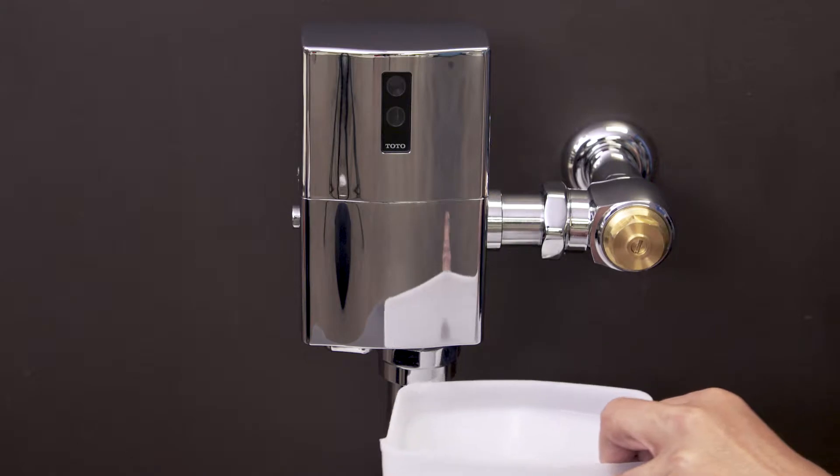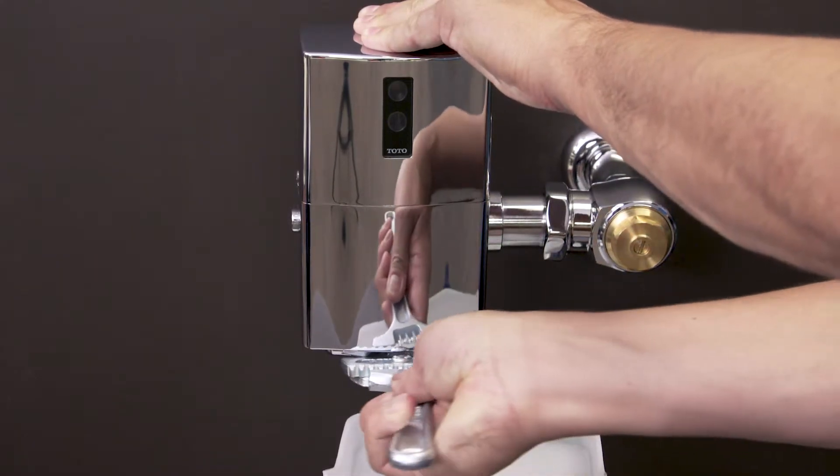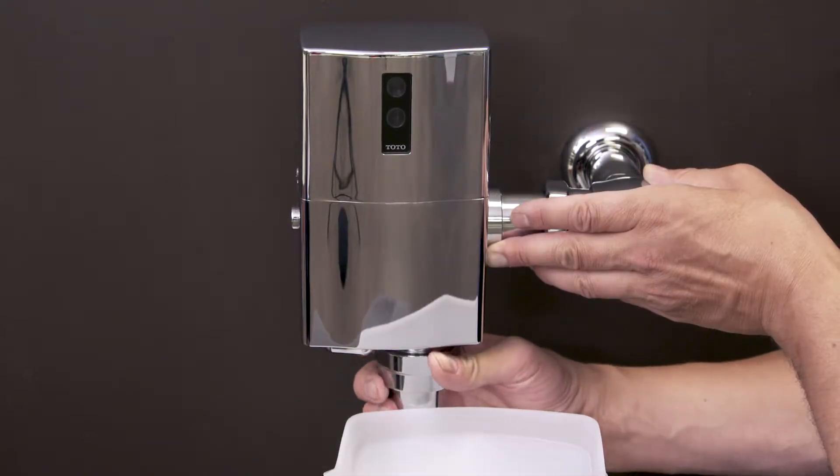Place a bucket underneath to catch any water that might spill. Use a smooth jaw wrench to loosen the vacuum breaker coupling.